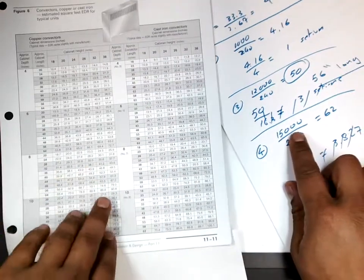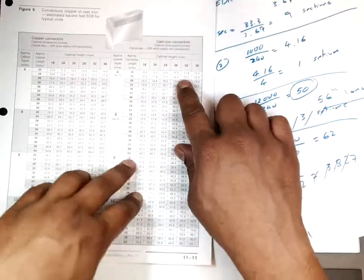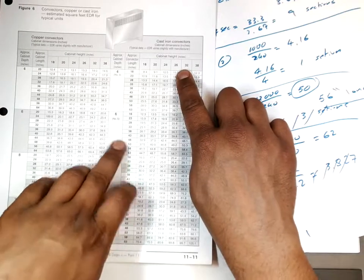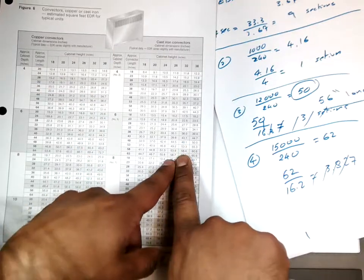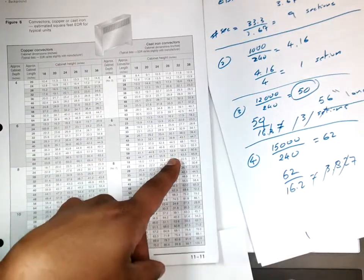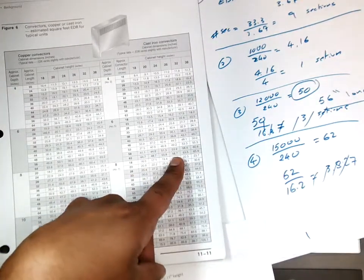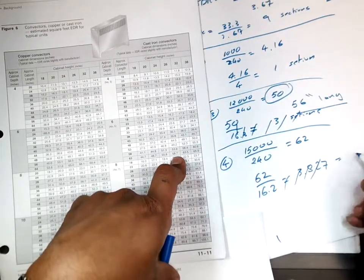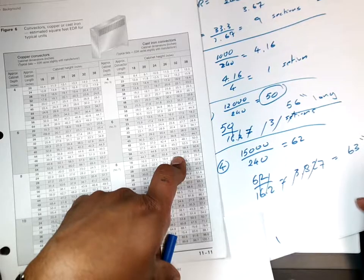So for example here, we have 15,000 over 240, we get 62. And we have cast iron with 26 height and 6 inches deep. So I'll go down and try to find the closest number. So this will do. This is close enough. So I'll go with 44, 63 length, which is going to be 63 inches long.